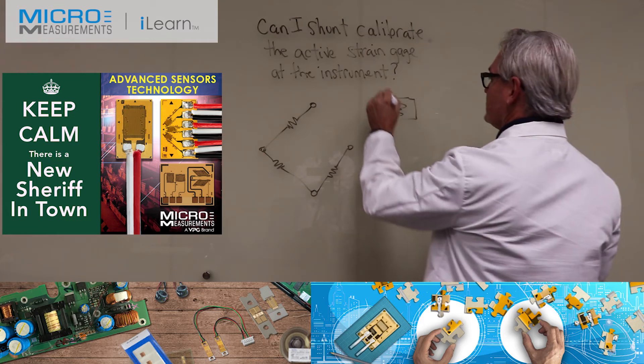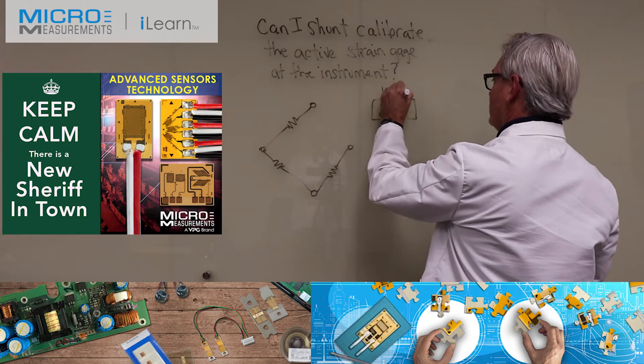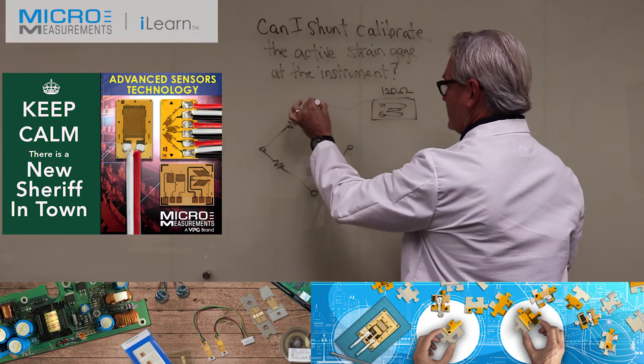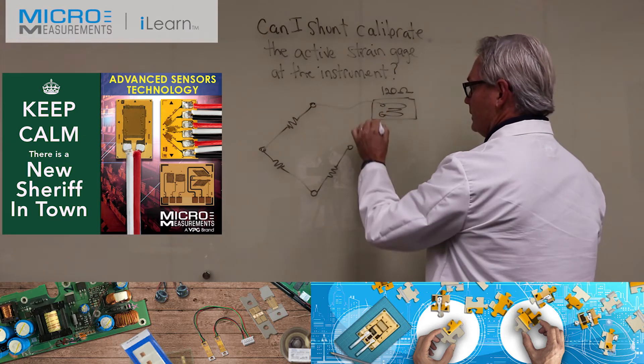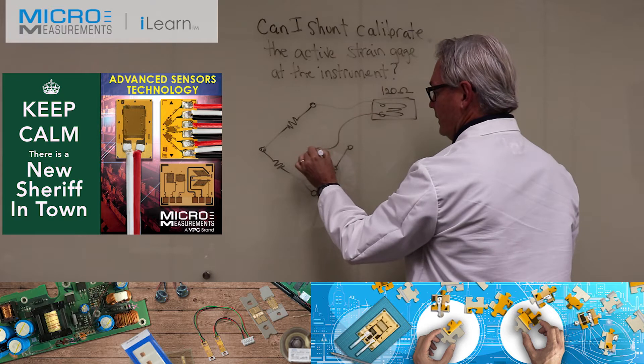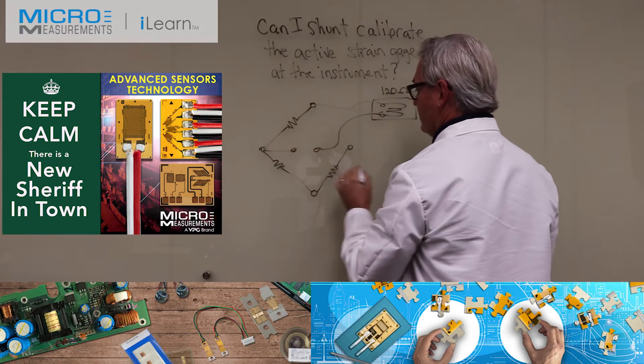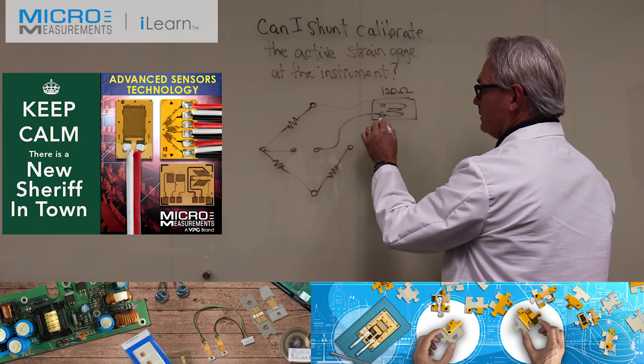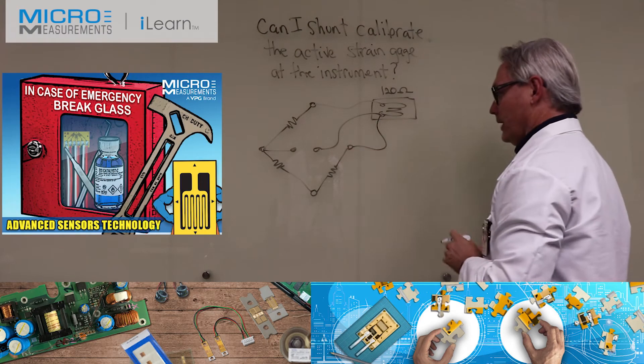This will be a quarter Wheatstone bridge, which means we're going to have one active strain gauge. Let's assume this strain gauge is 120 ohms and it's going to be a three-wire system. So I got one lead connecting to that location, another lead that's going to be a signal output, and then a third wire that's going to connect down to this location.